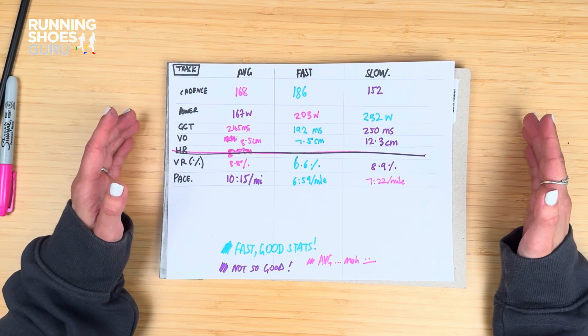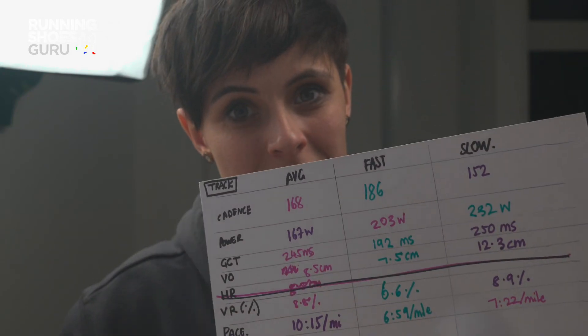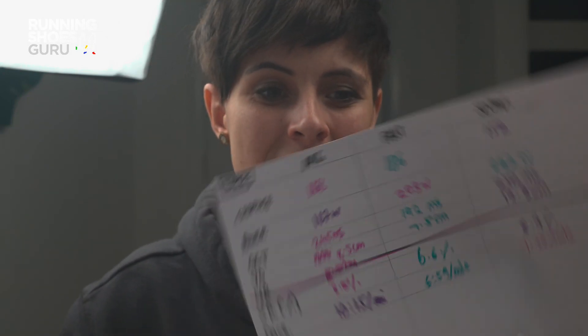I remember saying on the track that I'm not going any quicker — but I was going way quicker. Three minutes per mile quicker, just by adding 20 strides per minute. And that's on a track.